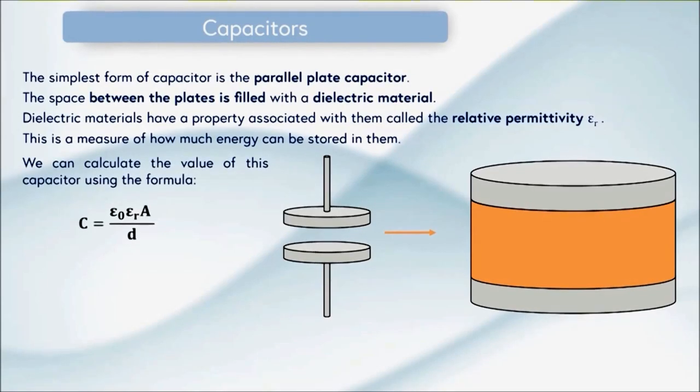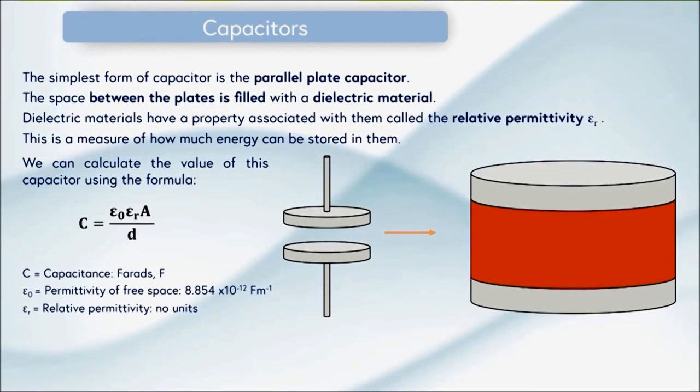We can calculate the value of a capacitor using the formula C is equal to epsilon 0 epsilon r A all over d. What does this mean? Well C is for capacitance and this is measured in farads with the symbol F. If you want to select a capacitor for use in a circuit this is the value that you look for rather than anything to do with the relative permittivity of the material inside. Epsilon 0 is the permittivity of free space and this is a universal constant. Epsilon r is the relative permittivity of the material inside the capacitor. This has no units and it's simply a multiplication factor.